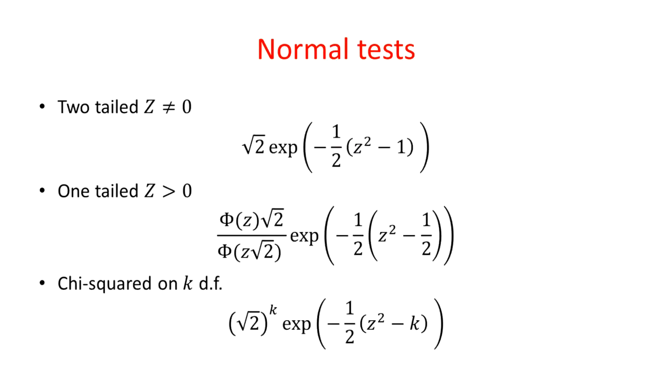Here are some empirical Bayes factors for tests of a normal random variable Z. A lot of tests in large samples come down basically to testing whether a standard normal variable is zero. And so the empirical Bayes factor looks like that. These are in favor of the null hypothesis, so you would take a reciprocal to get the empirical Bayes factor for the alternative. You can get one-tailed tests as well, and the multivariate version gives an equivalent to chi-squared tests.